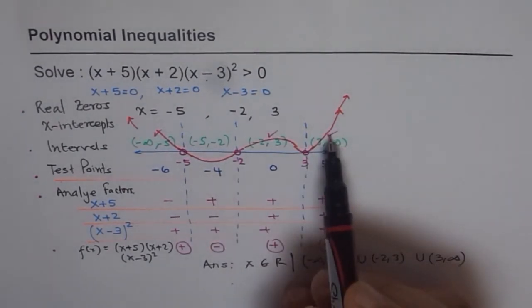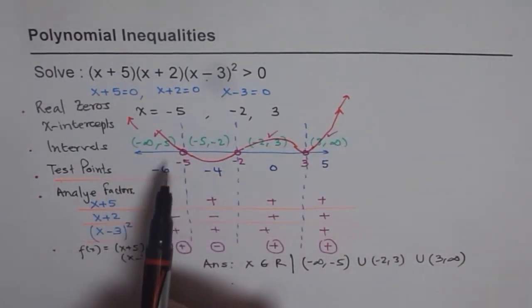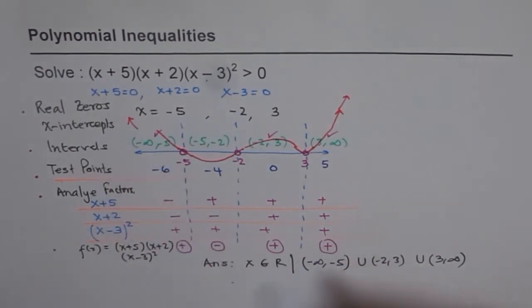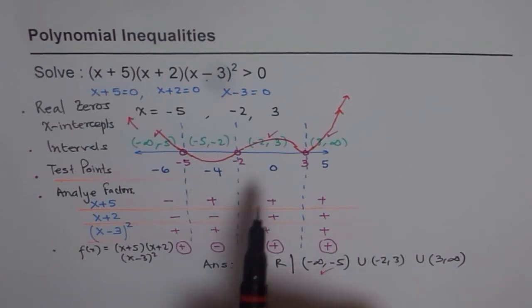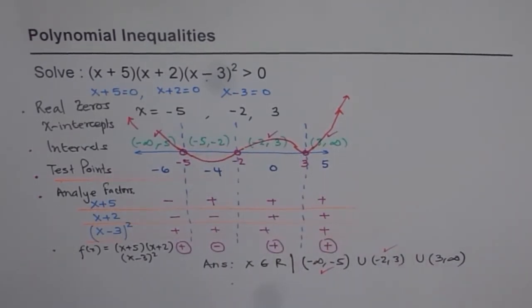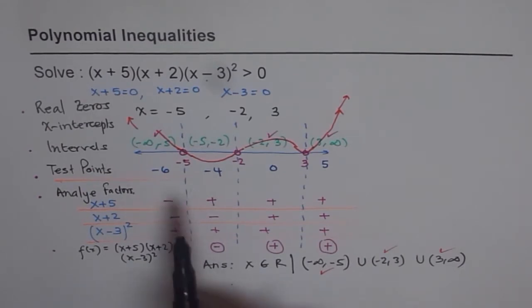From this graph, you can see it is positive from minus infinity to minus 5. So that is our part of solution. Minus infinity to minus 5. It is positive from minus 2 to 3. And from 3 to infinity, you get your answer straight. So, if you draw, sketch your graph. After getting the zeros, you could write down the answer. But, that's an easy way out and most effective way.